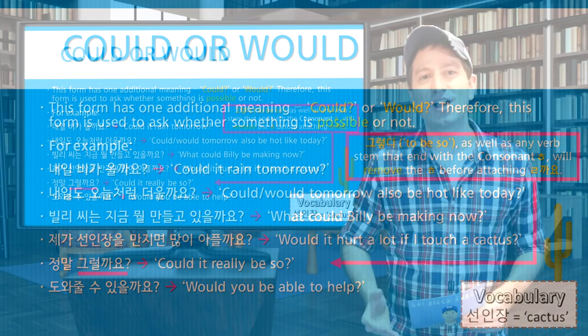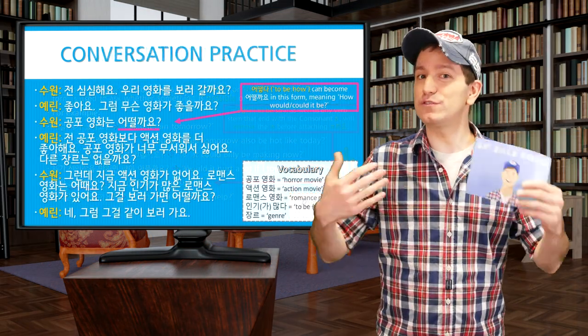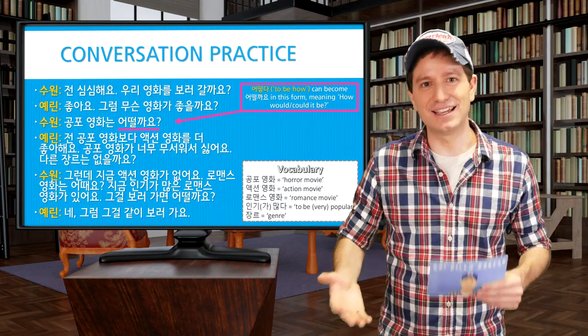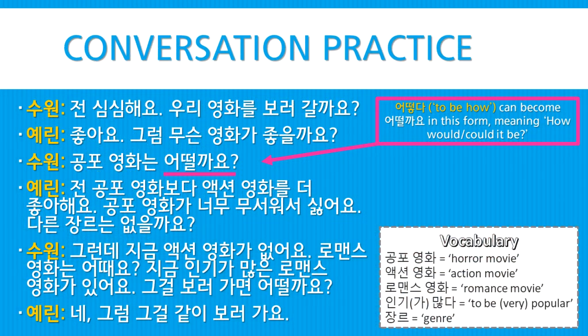So let's do some conversation practice using this form. We have two people here, 수원 and 예린. First, 수원 says: 전 심심해요 — I am bored. 우리 영화를 보러 갈까요? — Shall we go to watch a movie? 좋아요 — Good. 그럼 무슨 영화가 좋을까요? — Then what movie could or would be good?